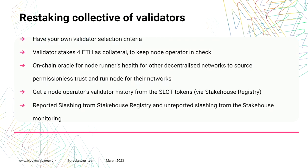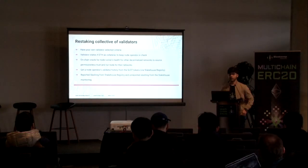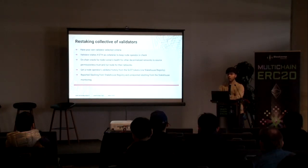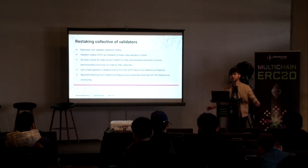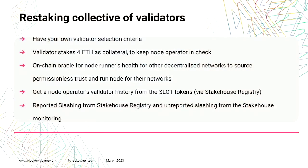Since we're discussing what we can build on top of Stake House, let's share some ideas. One is restaking collective of validators. The Stake House contracts take note of validator balances and how much a validator is getting slashed, so even the slashed balance will appear on the Stake House contracts. We will have active information about how a validator is performing. So let's think of a scenario where we've got a bunch of validators and we have all the reports on our Stake House contracts — we know how healthy they are, how well or poorly they are performing.